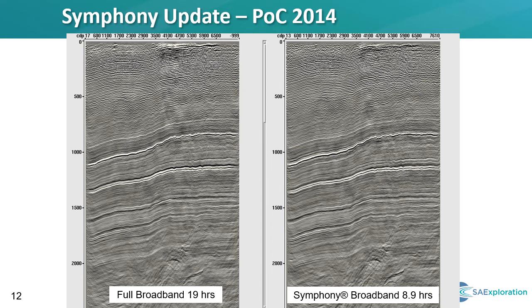Here we have the results of our proof of concept test. In the interest of time, I'll only show the comparison of the broadband portion. On the left, we show the data from the full broadband acquisition where each source point was acquired with a 36-second, 1.5 to 100 hertz sweep — it took a total of 19 hours to acquire. On the right side, we have the Symphony broadband solution, which was acquired using the scores shown on the previous slides. The Symphony acquisition took less than half the amount of time — 8.9 hours versus the 19 hours of the full broadband solution. Looking at the two images, there's no noticeable difference. In fact, on some of the additional work we've done with the data, we've noticed that the Symphony dataset appears to have slightly higher frequency content. We've postulated that low-frequency broadband sweeps tend to introduce more ground roll at each source location, and in mitigating this noise during processing, we might actually be compromising some of the higher frequencies. With the Symphony solution, more than half of the sweeps have little or no ground roll, so this seems a reasonable explanation.